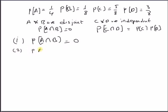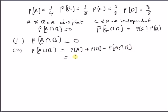Second, we want to find probability of A∪B. The formula is: probability of A∪B equals probability of A plus probability of B minus probability of A∩B. This equals 1/4 plus 1/8 minus 0, since A∩B is an empty set. So probability of A∪B equals 3/8.